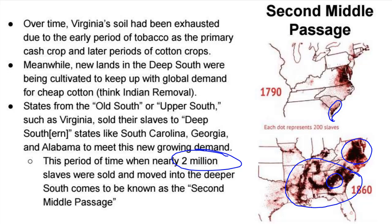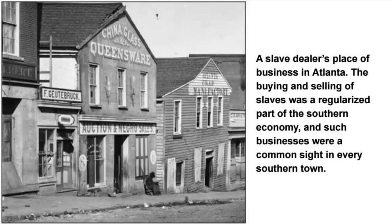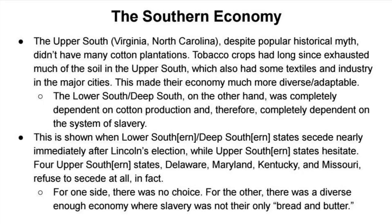Thomas Jefferson, at the tail end of his life, actually made his living selling slaves. His plantation was no longer as productive as it once was, and he lived his retirement years by selling off his slave holdings. This photograph, pulled from the textbook, shows a slave dealer's place of business in Atlanta — just a regular part of the southern economy. Almost every town of decent size had a slave auction site, or multiple slave auction sites.